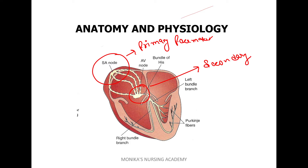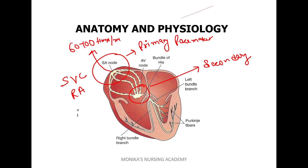The SA node is located at the junction of the superior vena cava and the right atrium. The rate of electrical impulses generated by the SA node is 60 to 100 beats per minute.